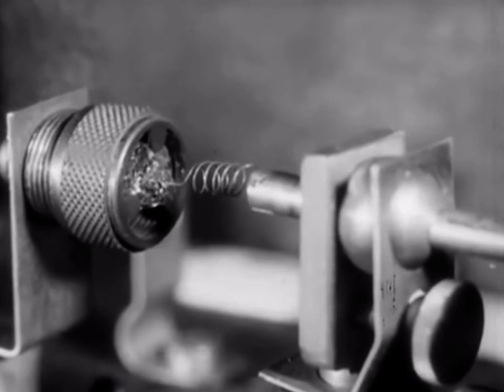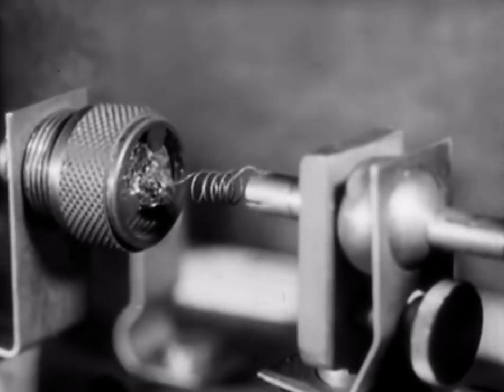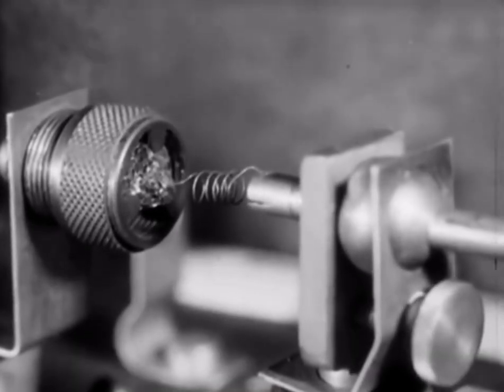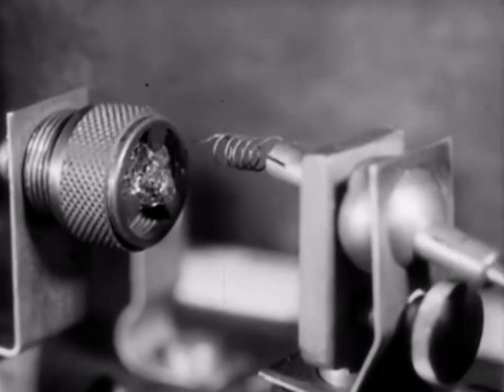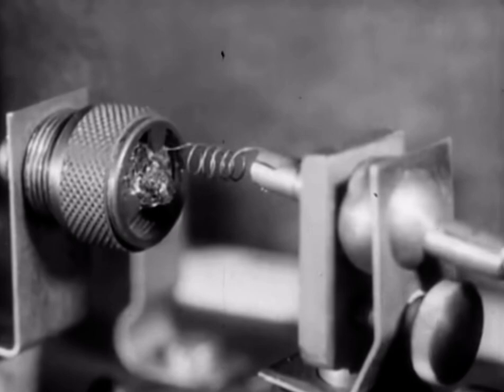When the cat's whisker touches certain parts of the crystal, the apparatus allows an electric current to flow more freely in one direction than the other. In other words, it rectifies or detects alternating current.